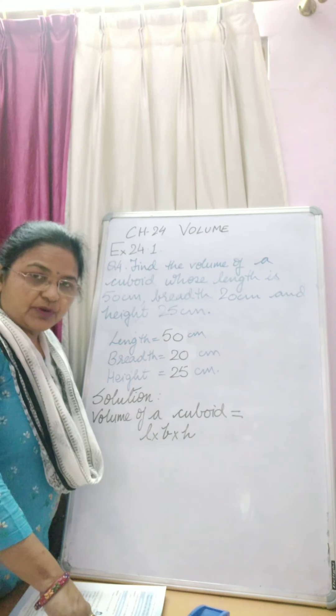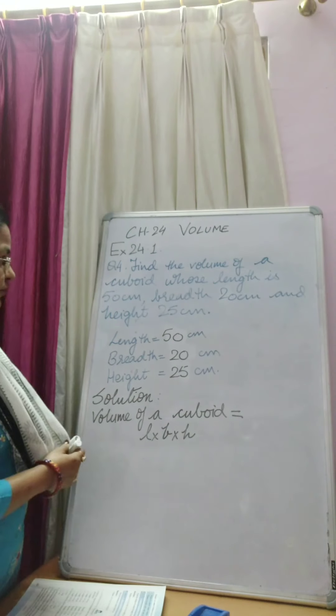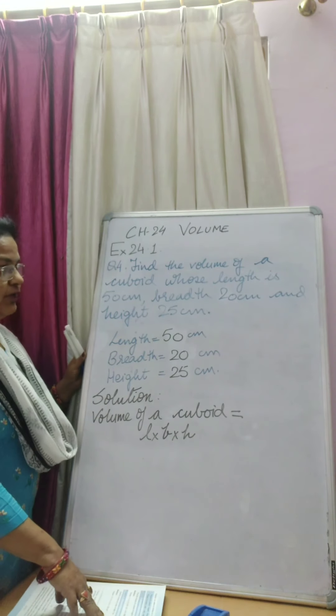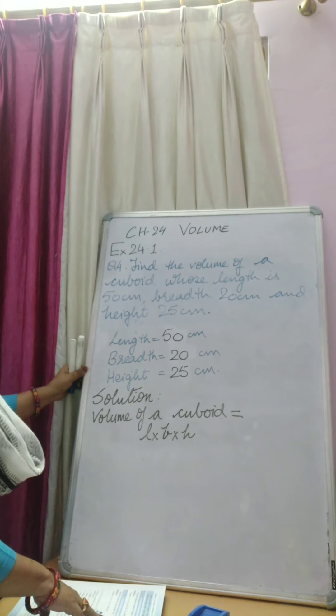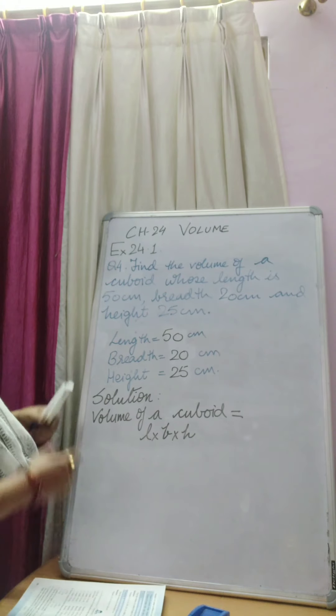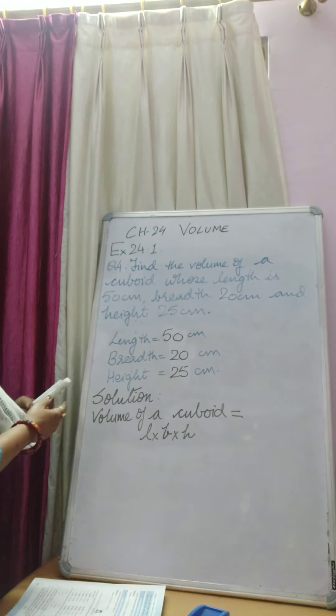We are continuing with the chapter 24, volume question number 4. Find the volume of a cuboid whose length is 50 cm, breadth is 20 cm and height is 25 cm. Now length, breadth and height of a cuboid is given and we have to find out the volume. Now let us come to the solution.